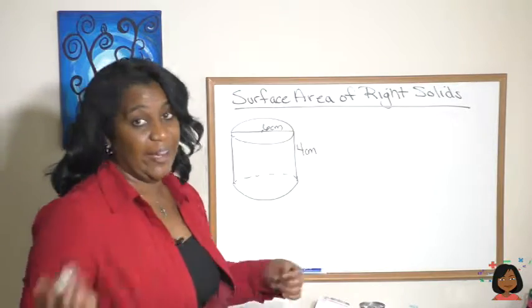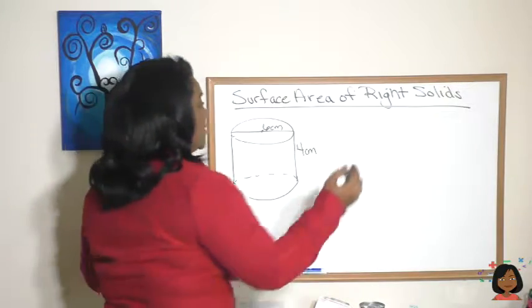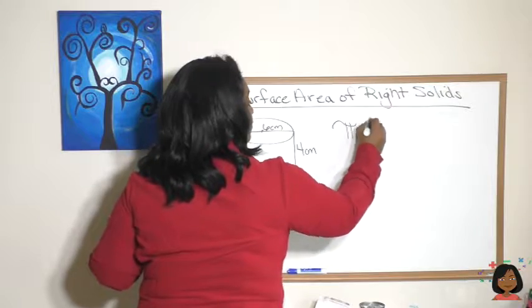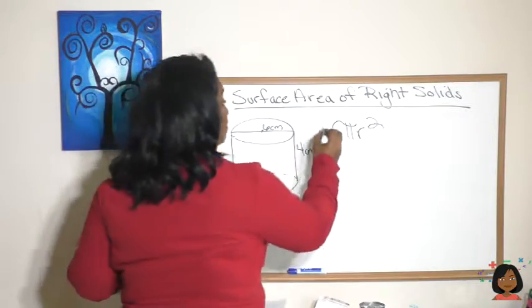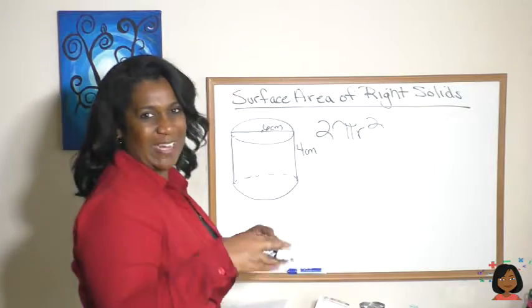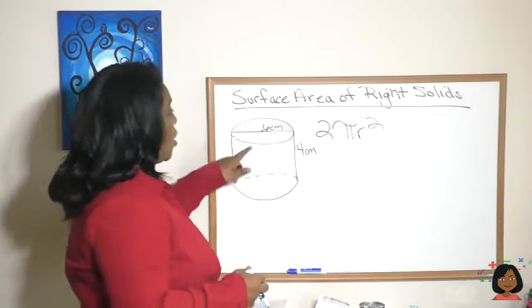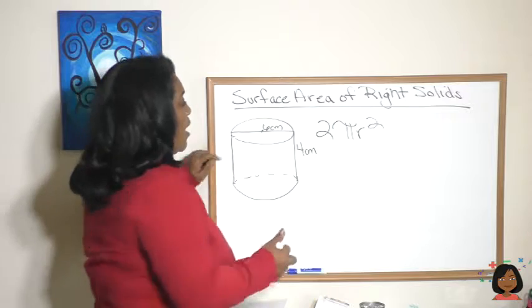Okay, let's start with the circle. Area of the circle, pi radius squared. Let's write it down. And then we're going to need two of them, right? One for the top, one for the bottom. I like writing them right up front so we don't forget about it.